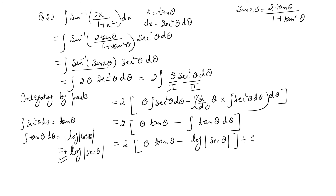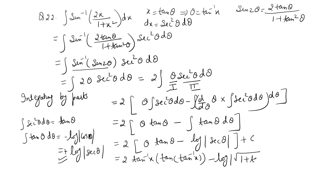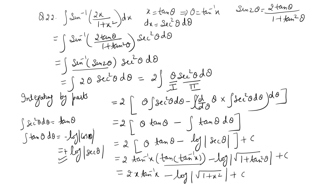Now substituting back: θ = tan⁻¹x, so tan(tan⁻¹x) = x. Also, sec θ = √(1 + tan²θ) = √(1 + x²). So the integral becomes 2[tan⁻¹x · x − log|√(1 + x²)|] + c, which simplifies to 2x·tan⁻¹x − log(1 + x²) + c. This is the required answer.